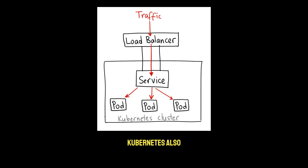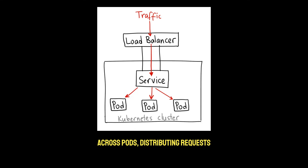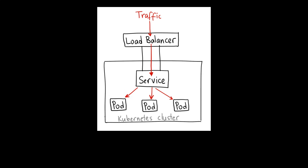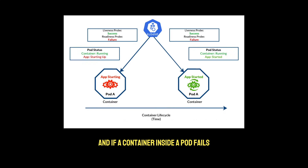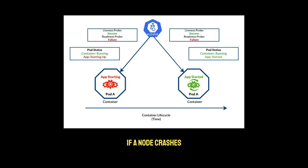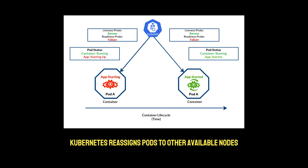Kubernetes also automatically balances incoming network traffic across pods, distributing requests so no single container becomes overloaded. If a container inside a pod fails, Kubernetes restarts it to maintain the desired state. If a node crashes, Kubernetes reassigns pods to other available nodes.